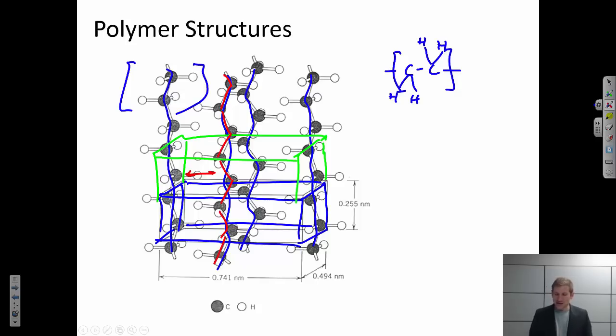And what that means is that individual polymer chains can move with respect to their neighbors. So that chain could move up and down. And so polymers tend to be very dynamic systems.